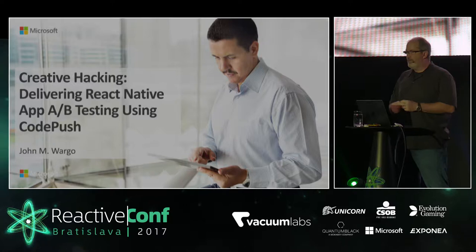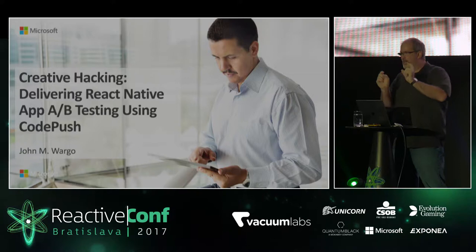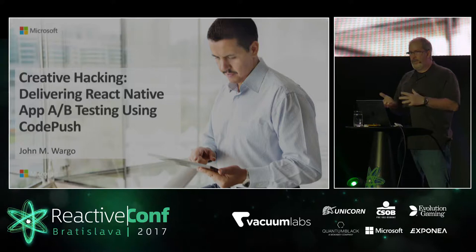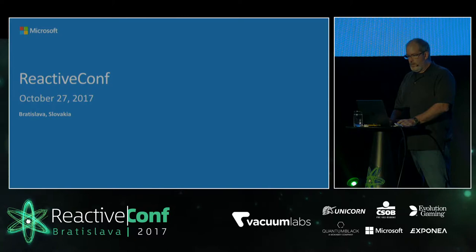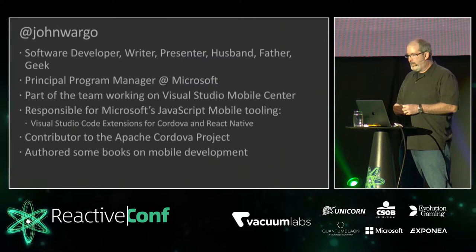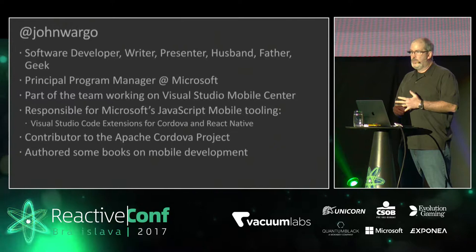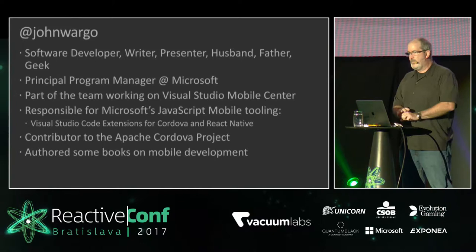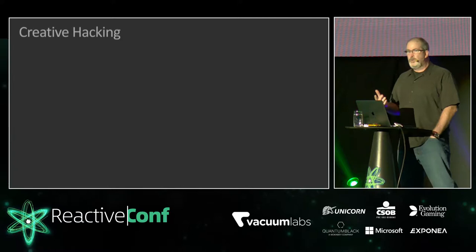I'm excited to be here. I want to talk about something I called 'creative hacking' — the conference folks took my whole long title and contracted it to those two words. I want to talk specifically about using some tools to make A/B testing with React Native easier. I'm a program manager at Microsoft, part of the team working on Visual Studio Mobile Center. I'm responsible for JavaScript tooling — the Visual Studio Code plugin for Apache Cordova and React Native. I'm a longtime Cordova contributor, just now getting into React Native, and I've written six books on mobile development.